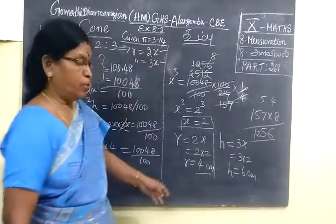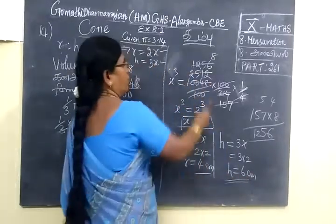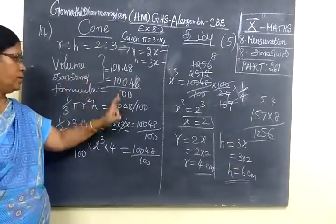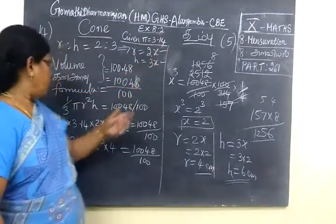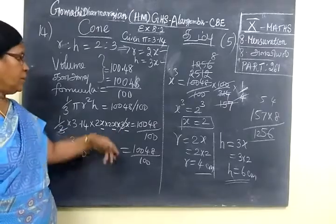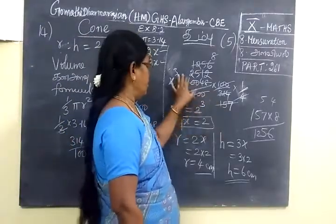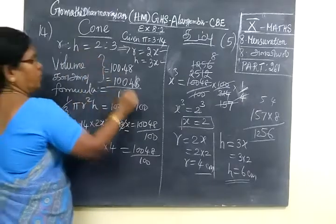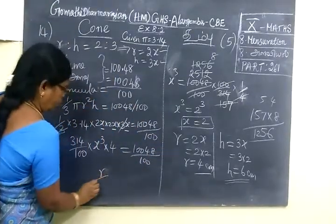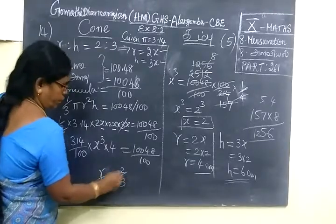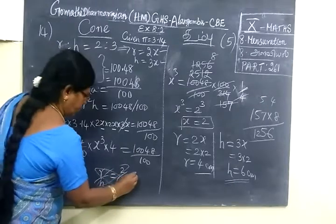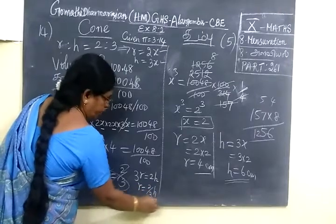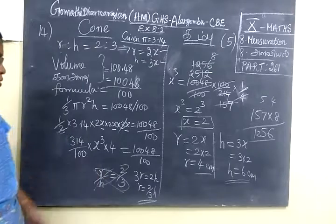This is coming under 5 mark questions. If you want to check the answer, formula equals answer. Here 3.14, put 3.14. Here 3-3 cancel, 1 cancel. This answer is 100. So R equals 2 by 3H is the ratio. 3R equals 2H, so R equals 2 by 3H. Thank you.